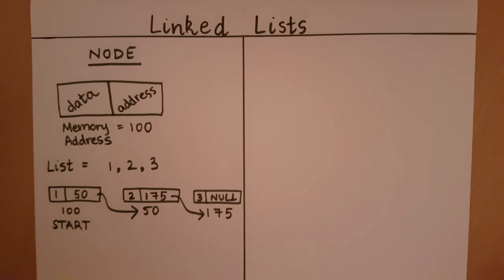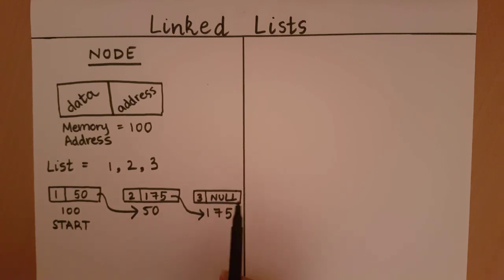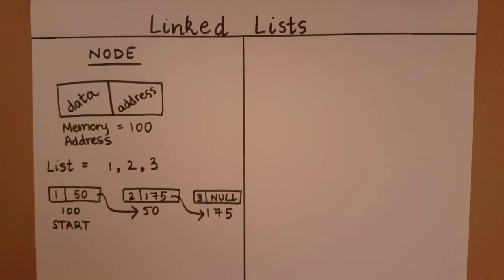The main advantage a linked list has over another structure like an array is that a linked list is dynamic in size — the size is not predefined. So if we want to add another element to this list, all we have to do is create a node and store the address of that new node in the address block of the third node, which was previously pointing to null. In that way we can keep adding elements. With an array, we store elements in a predefined location; when we create an array we tell the memory how many spaces we need, and we cannot exceed that.